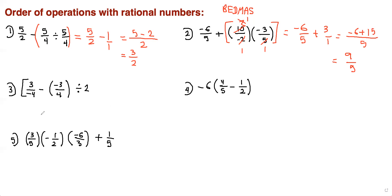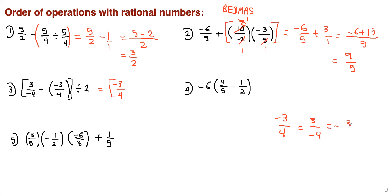The next one: we do what's in the brackets first. We don't like the negative to be on the bottom, so I'm going to put it on top. Negative 3 over 4 is the same as 3 over negative 4, which is the same as negative 3 over 4. All of these are the same. We don't like the format with the negative on the bottom, especially when you're adding fractions.